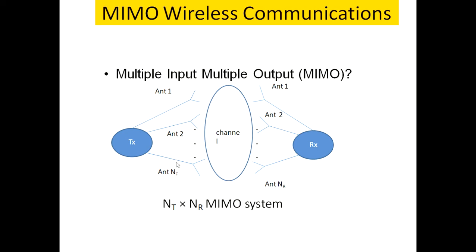Whatever number of signals are transmitted, that many multipath routes are taken by the transmitted signals. All the signals are captured by the wireless channel and then released in the opposite direction.